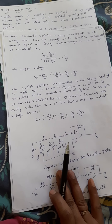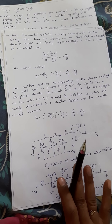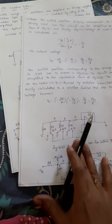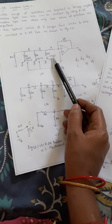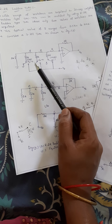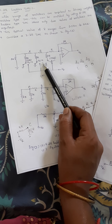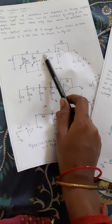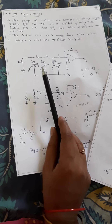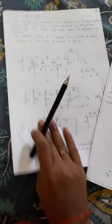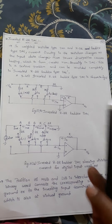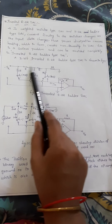This is the explanation about the R2R ladder. As the input changes in R2R, the currents in these resistors change. If you change the input by just changing the switches, the current changes immediately, which causes more power dissipation in these resistors. So to avoid that problem, we go for the inverted R2R ladder.